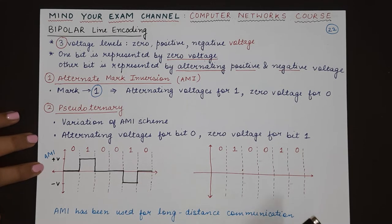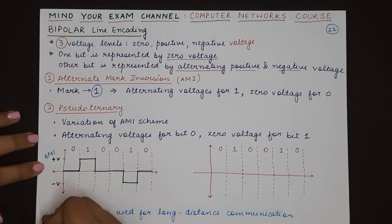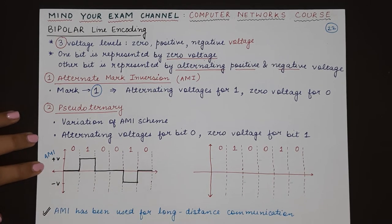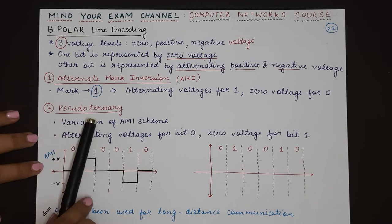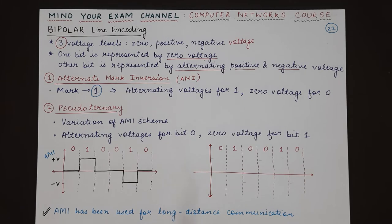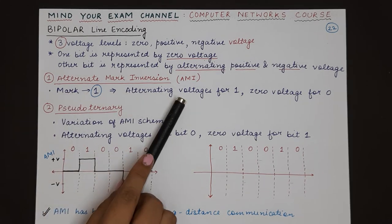AMI has been used for long-distance communication. This is the use of Alternate Mark Inversion. Coming to the second part, pseudoternary line coding. Pseudoternary is a variation of AMI.